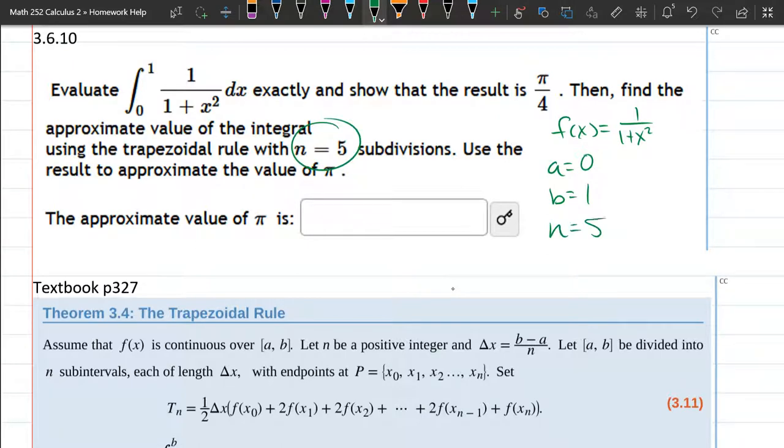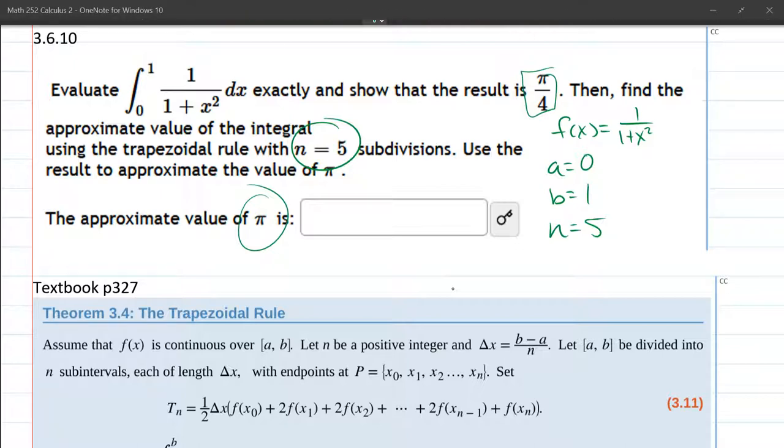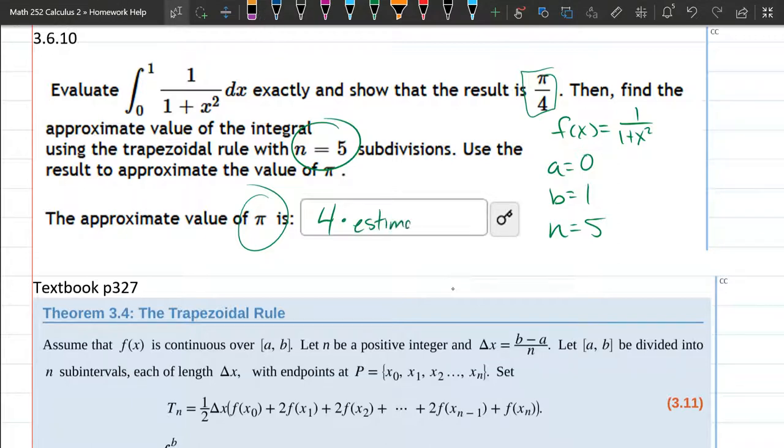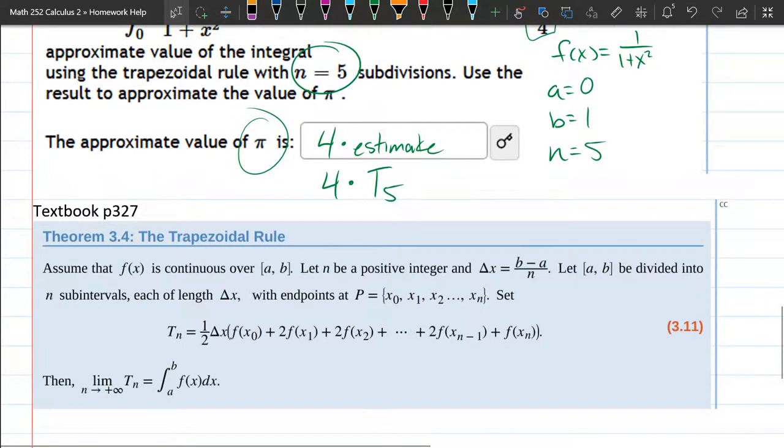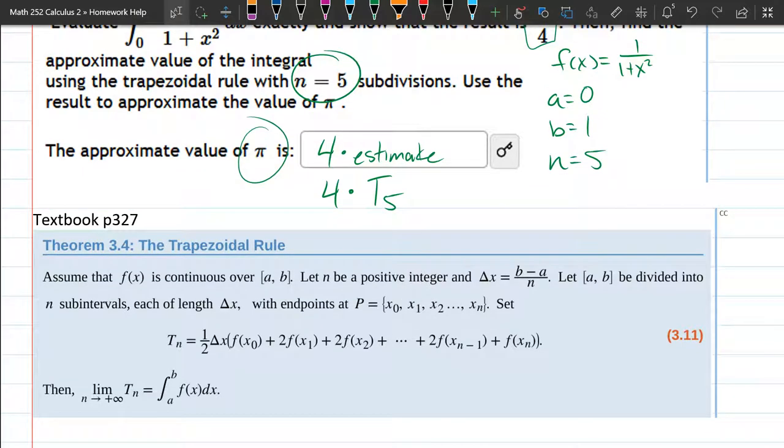What we're going to get at the end is an estimation for pi over four. They don't ask for the estimation of pi over four—they want the estimation of pi. So we're going to get one quarter of what they're asking for. You're going to do four times the estimate, which for us will be written as T_5 because we're computing T with five subdivisions. Your result is going to be four times this estimate.